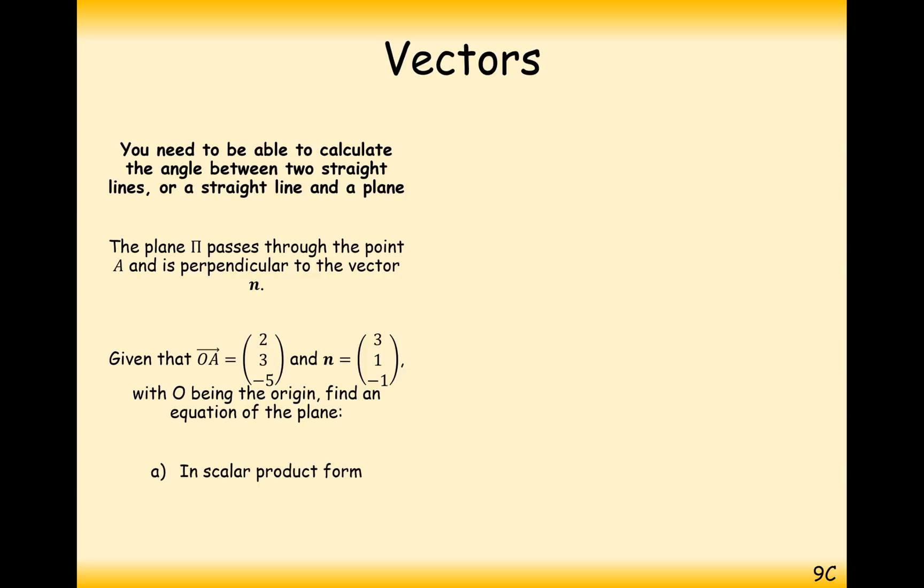Okay, so in this question here, let's have a go at trying to put this into action. Given that o to a is 2, 3, minus 5, in fact, we have a coordinate a of 2, 3, minus 5. And the n vector that's perpendicular to the plane is 3, 1, minus 1. With o being the fixed origin, find an equation of the plane in scalar product form and Cartesian form.